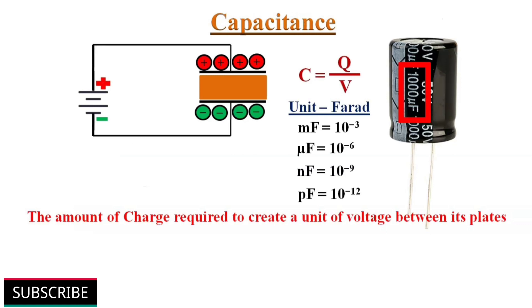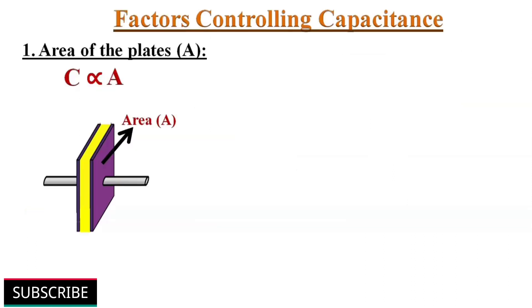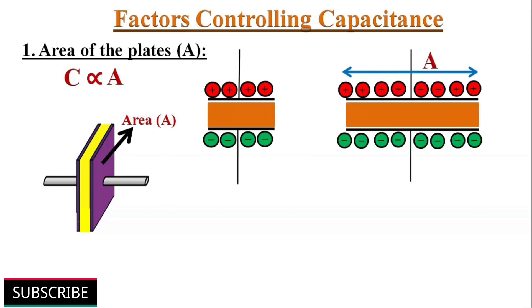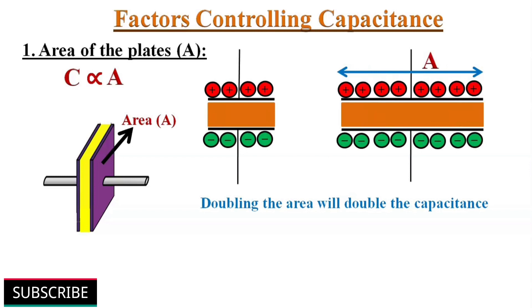The capacitance of a capacitor, meaning how many farads it has, depends on how it is constructed. There are three factors which influence capacitance. First one, area of the plates. Capacitance is directly proportional to the area of its plates. Larger plates provide greater capacity to store electric charge. Therefore, as the area is doubled, the capacitance will also get doubled.